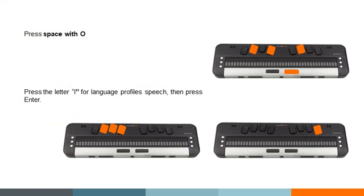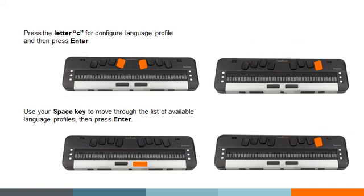This used to be called braille profiles, but now your profile contains TTS choices, so we've changed the name from braille profiles to language profiles. I'm going to press the letter L to move to language profile and press enter. Now I'm placed on a list of profiles. I can configure these by using M with space, or I can press the letter C once I'm in this language profile menu to move to the configure profile option.